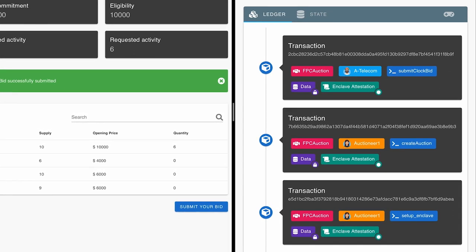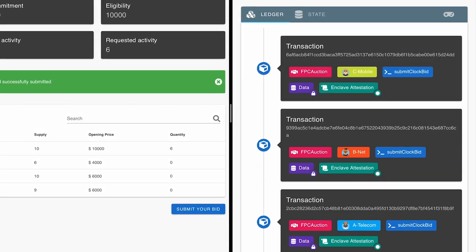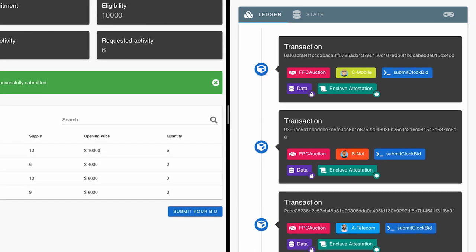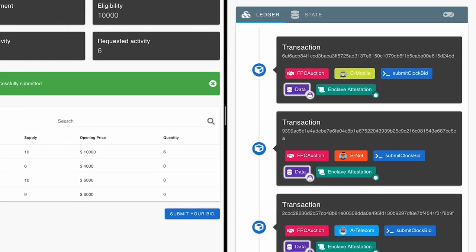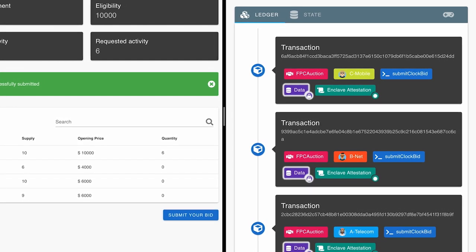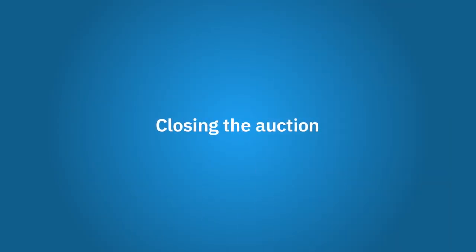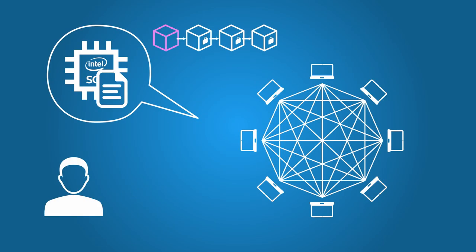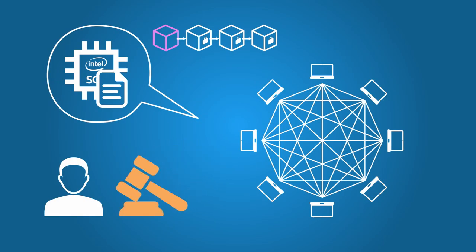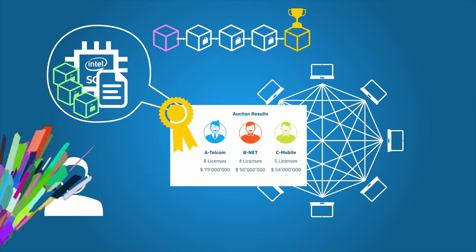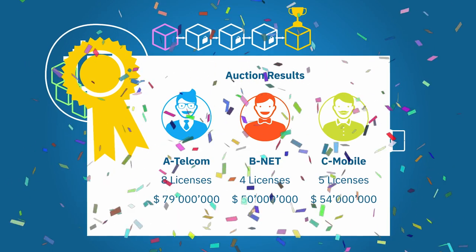In the meantime, the other bidders are also placing their bids. The content of their bids cannot be seen. Now the auctioneer closes the auction. The chaincode reads the bids from the ledger, decrypts them, and announces the results in public.